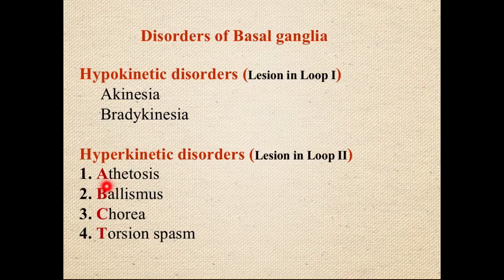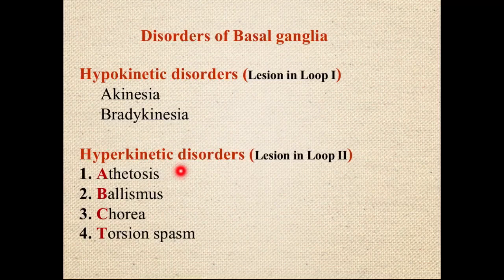Hyperkinetic disorders include several named conditions depending on the type of movement: athetosis, ballismus, chorea, torsion spasm, and others. Athetosis involves a wriggling, serpentine kind of movement — you can search for videos on YouTube to see what athetosis looks like.